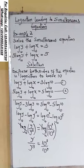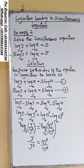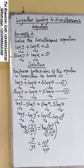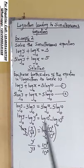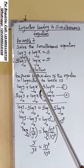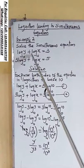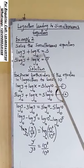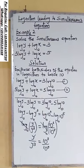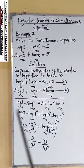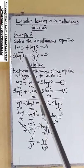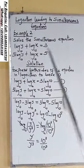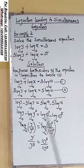Log leading to simultaneous equations. Solve the equation: log y base 10 plus log x base 10 equals 3, and 3 log y base 10 plus log x base 10 equals 5.